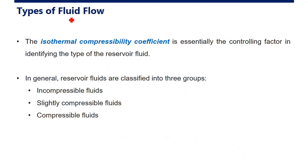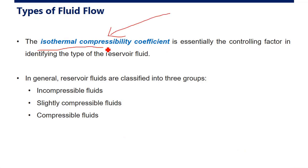Regarding the type of fluid flow, the isothermal compressibility coefficient is essentially the controlling factor to identify the type of reservoir fluid. This coefficient is very important to identify whether the fluid is compressible or incompressible. There are three groups.